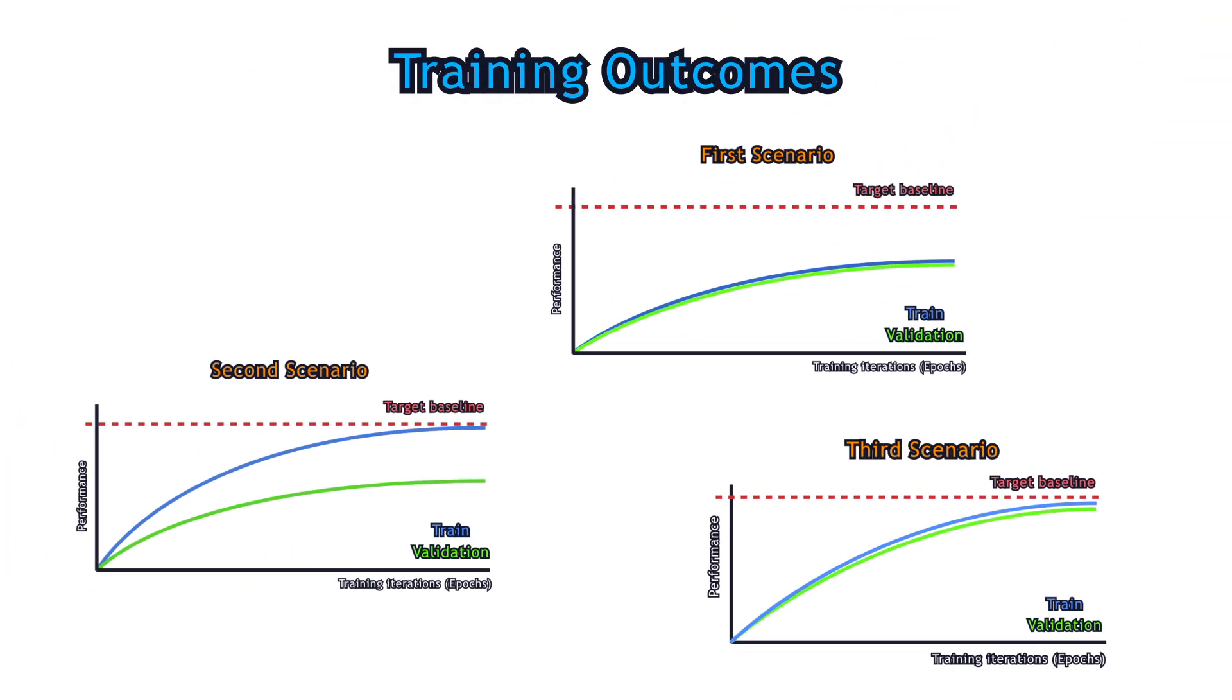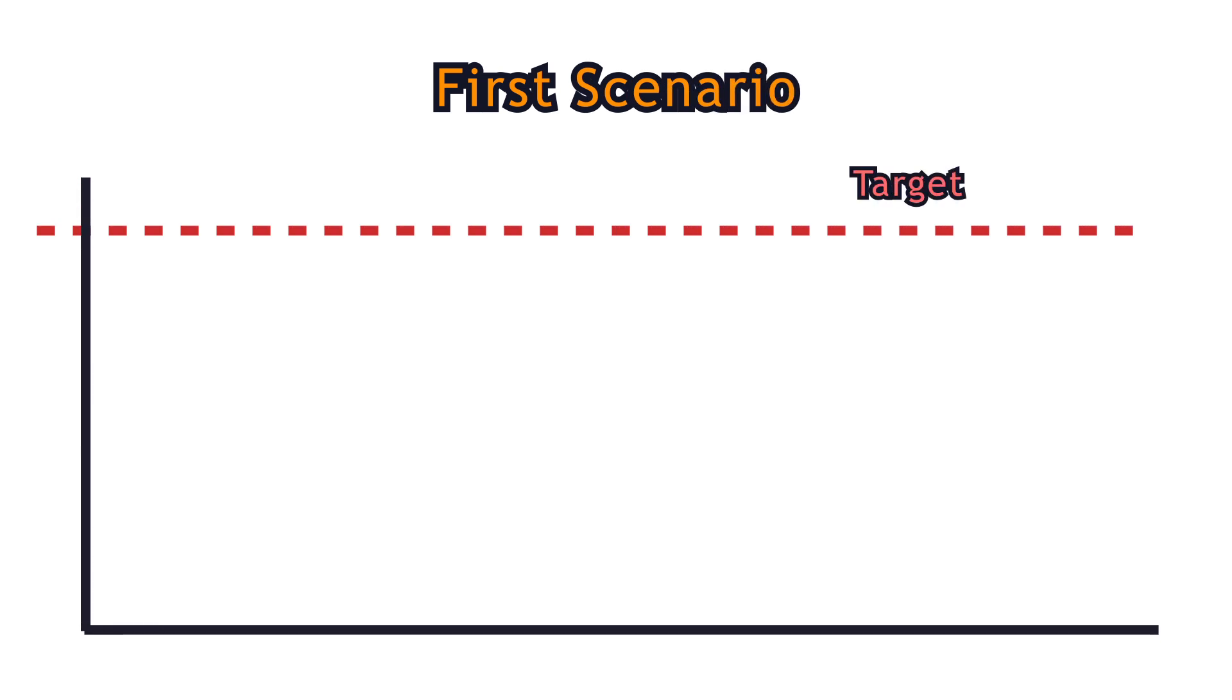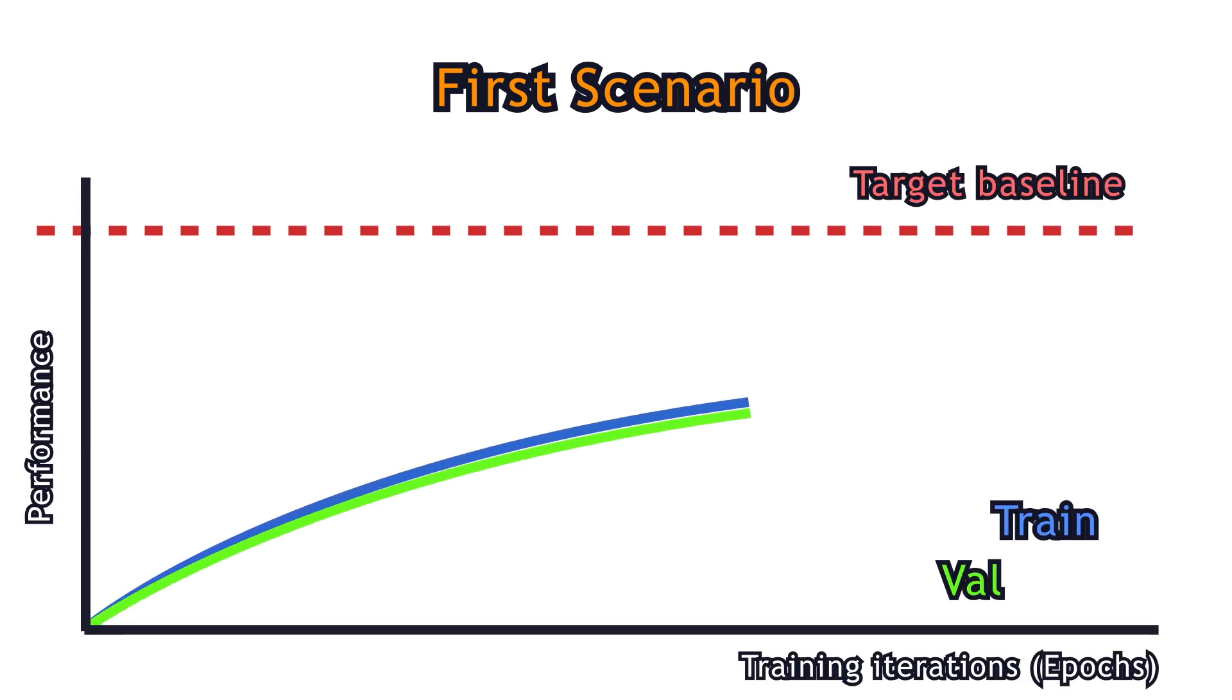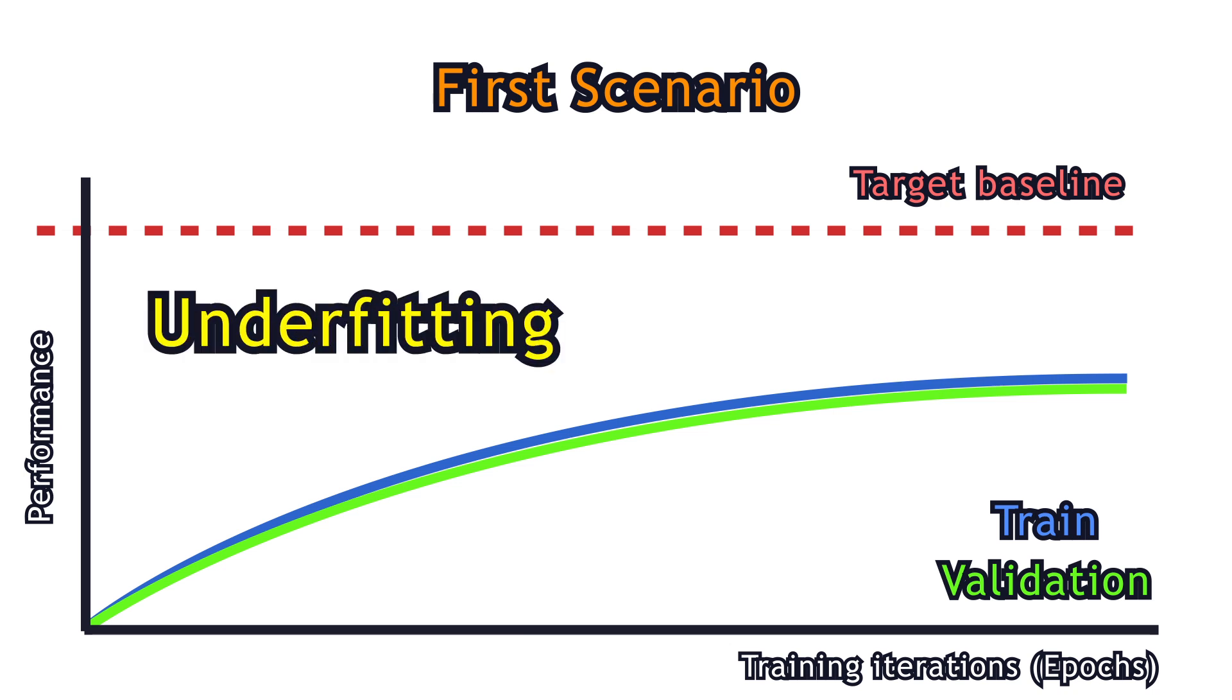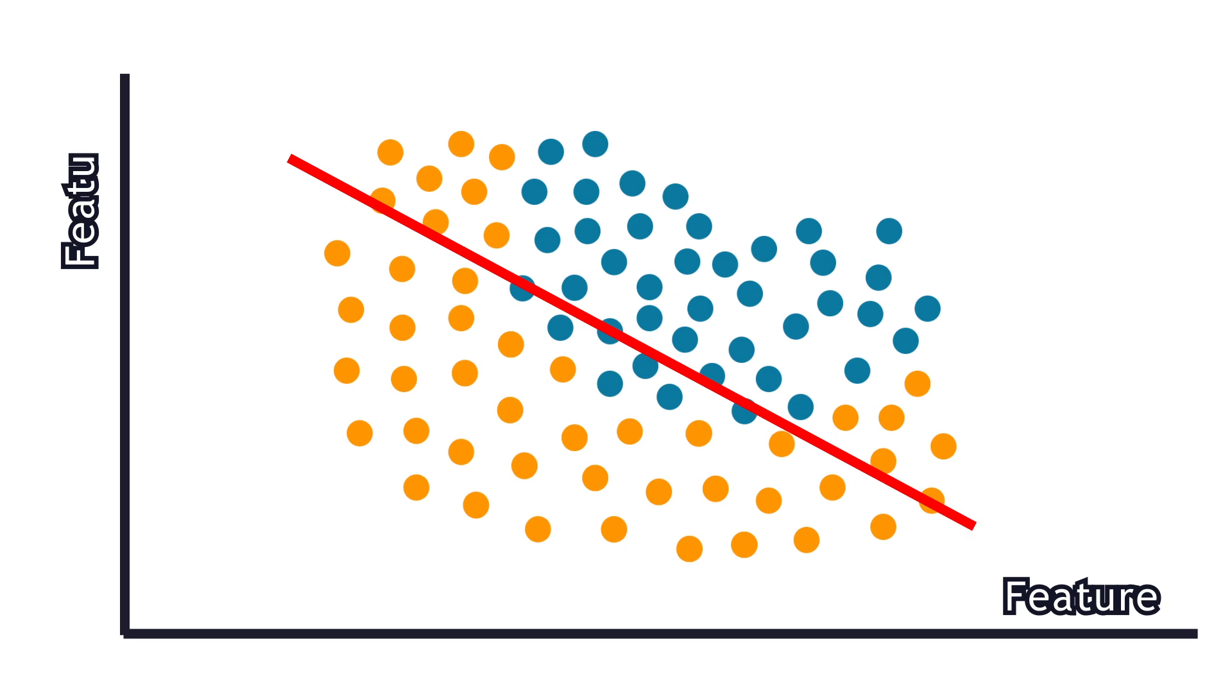During the training process, there are three possible scenarios. Firstly, you get bad performance on your training data and bad performance on the validation data as well. This is when your model underfits, meaning your model is too simple to capture the underlying structure of the data. We say the model has high bias.